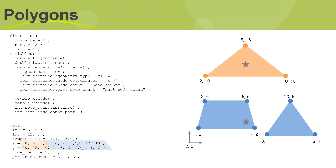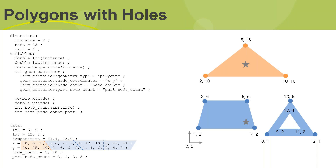For polygons, the structure is exactly the same as for multi-lines — we just fill in the area. The only change needed is to update the geometry type in the geometry container from 'line' to 'polygon'. That's it.